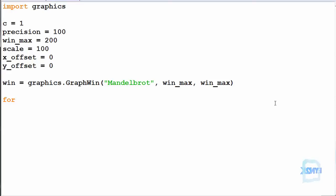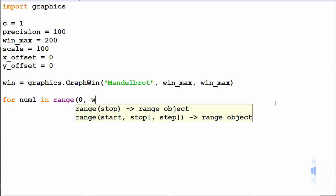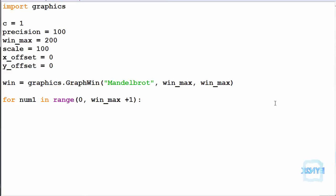So now first we'll iterate over the range of the window. We'll do num1 and num2 in range from 0 to win_max. Then we have to add 1 because remember it does not include the maximum range. So now we'll get every value from 0 to 200 and we can make Y equal to, and please bear with me, we'll get the number 1 and divide by the scale.